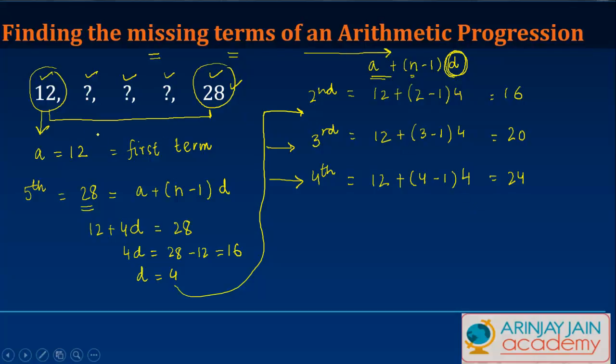And that is how you find out the missing terms of an arithmetic progression. Because to find these missing terms what we need to know is the first term and the common difference. Once we know the common difference it's easy.